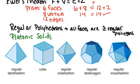And here are the five platonic solids. We have a regular tetrahedron, which has four faces that are all equilateral triangles. Then we have the cube, which has six faces, and they're all squares.